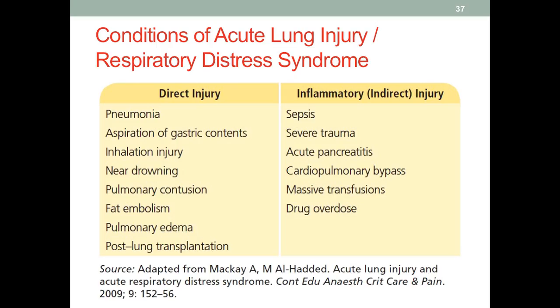The types of injury that can lead to respiratory distress syndrome include injuries affecting the respiratory system directly. For example, we can have severe pneumonia, pulmonary contusion, pulmonary edema, fat embolism — where fat content gets into the blood circulation and eventually gets stuck in the lungs — or a near drowning incident. All of these injuries directly affect the respiratory system; they are a direct injury to the lungs.